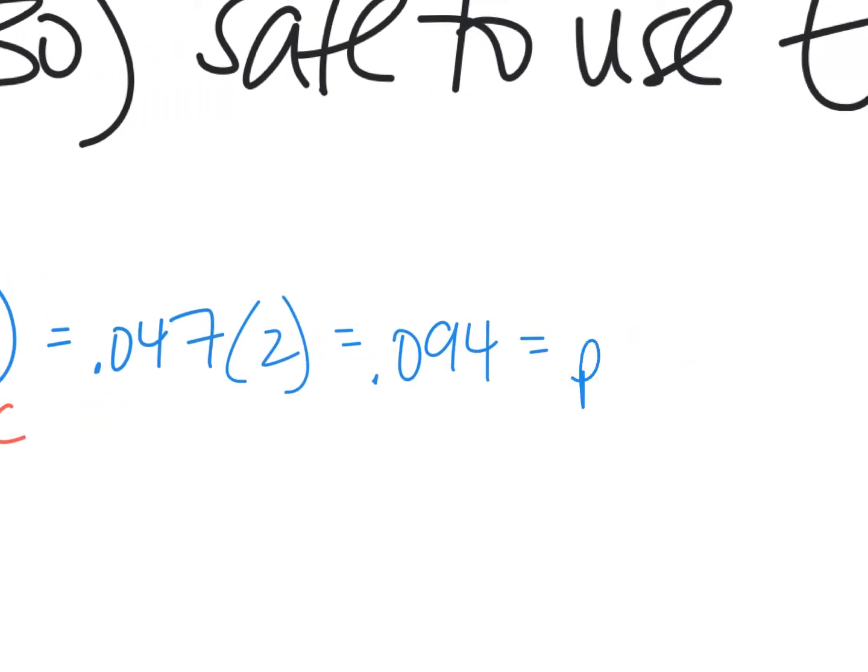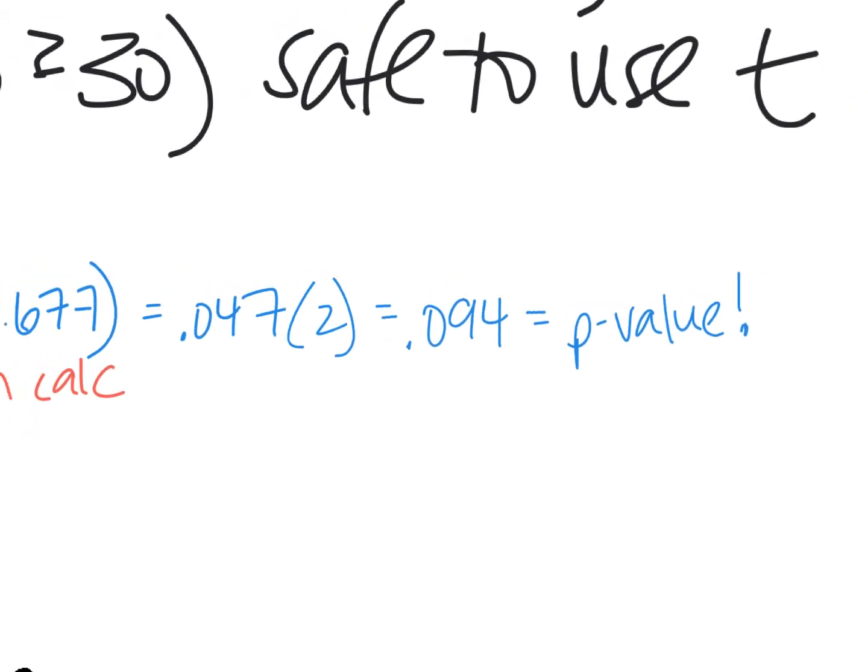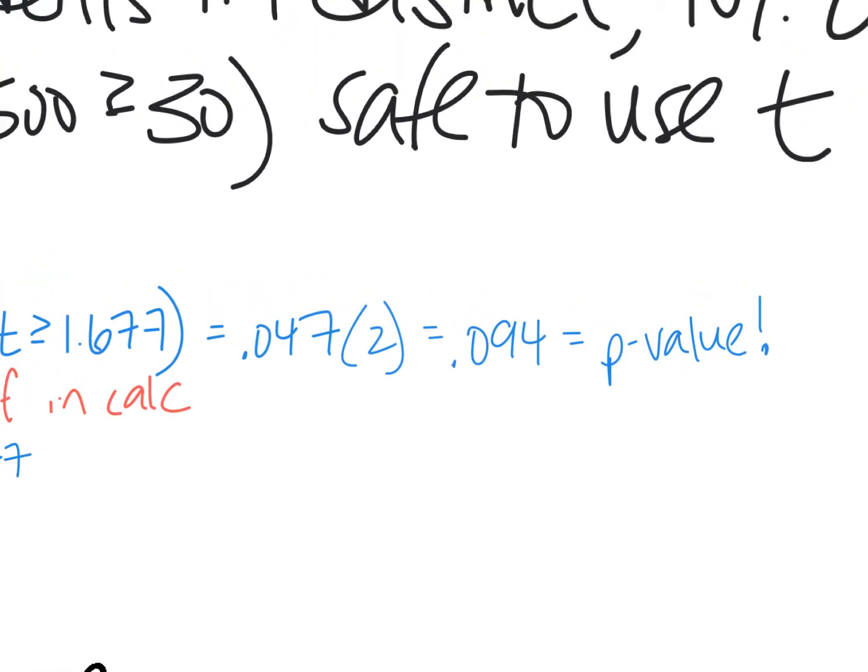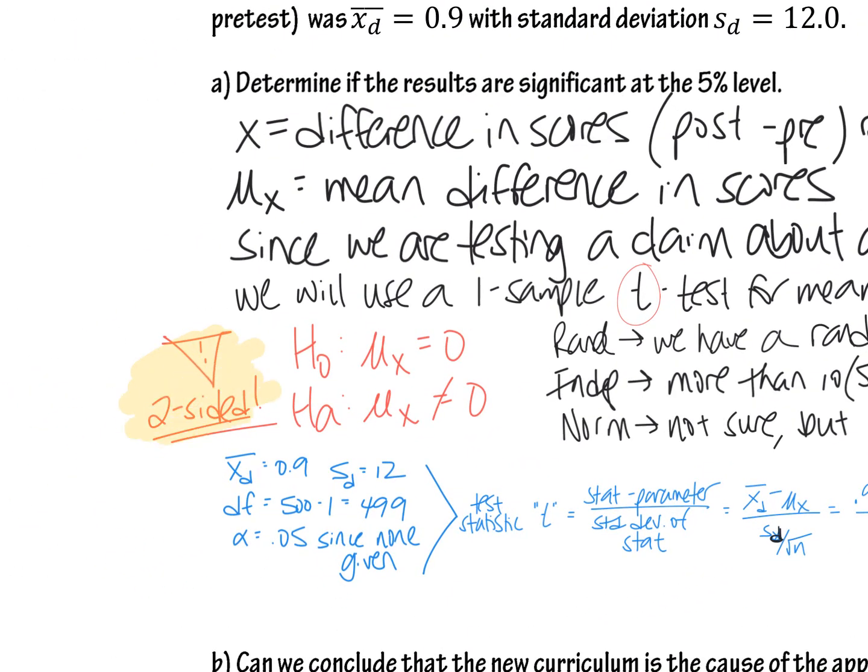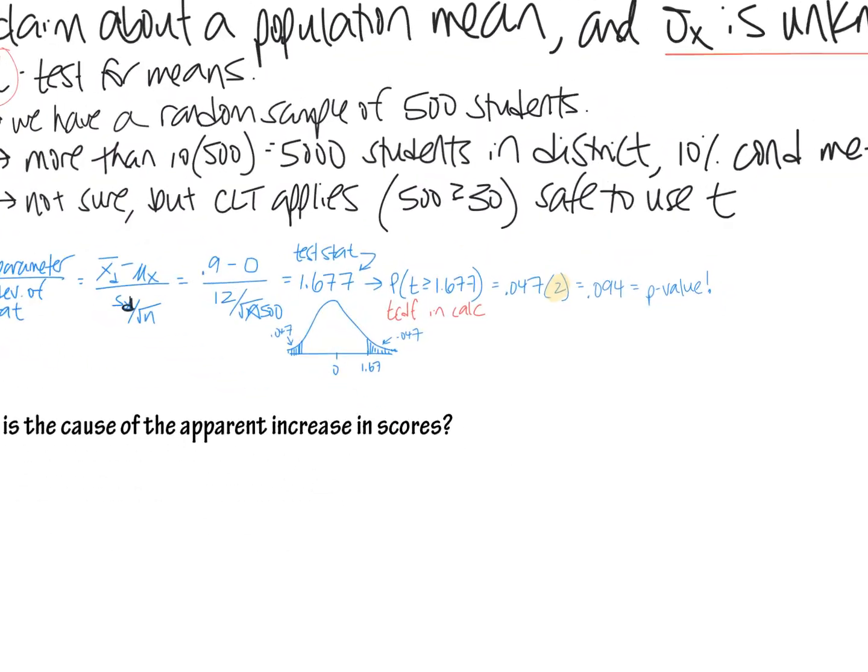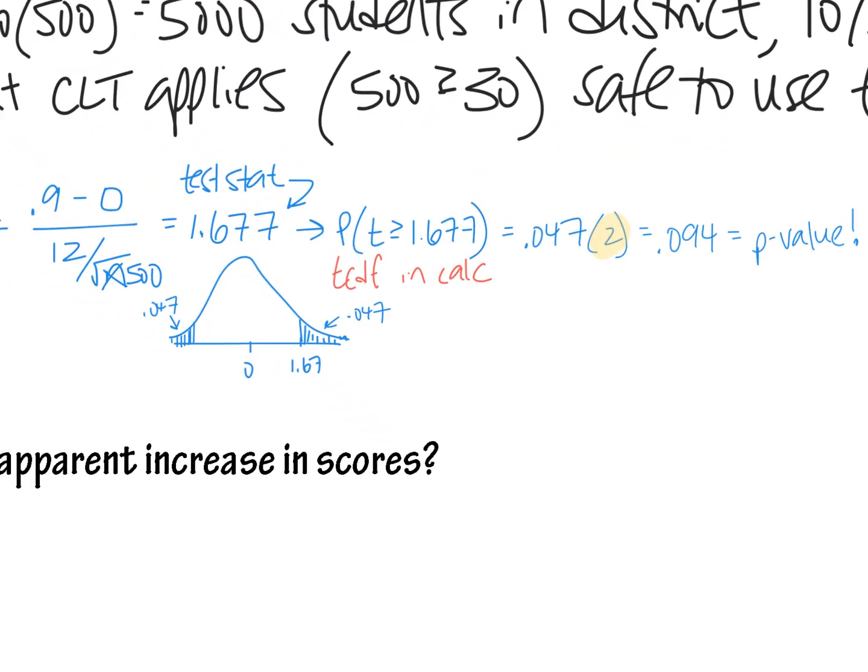So make a big note about this 2, because we have a two-sided test. That means that when you crunch your p-value, you need to double it, because you need to take into account both tails, this one and this one. That's what a two-sided test is. That's why we wrote not equals in our alternate hypothesis.